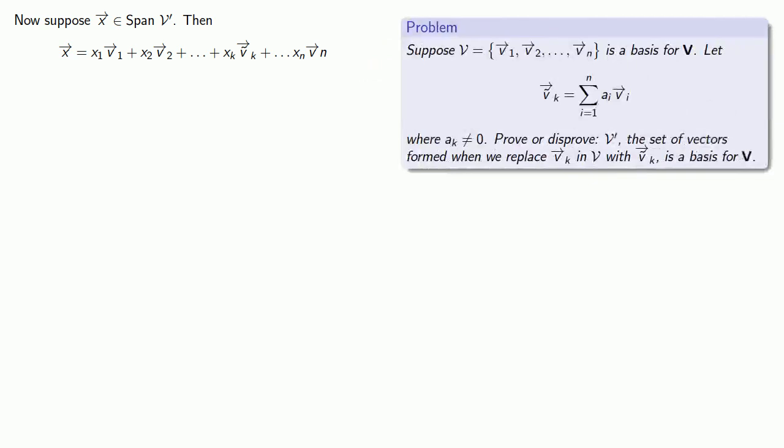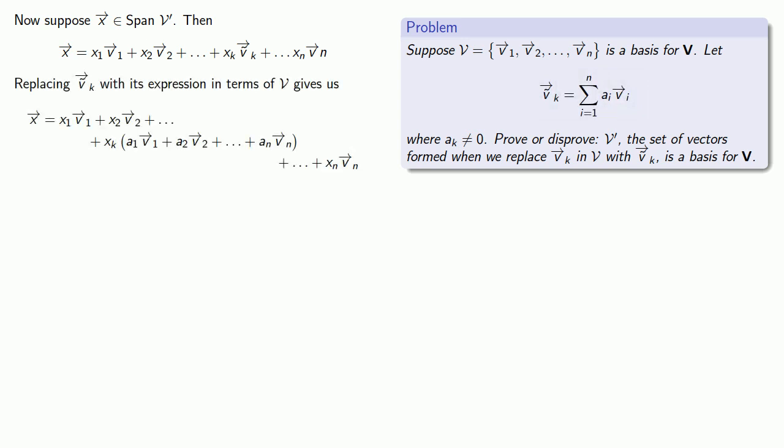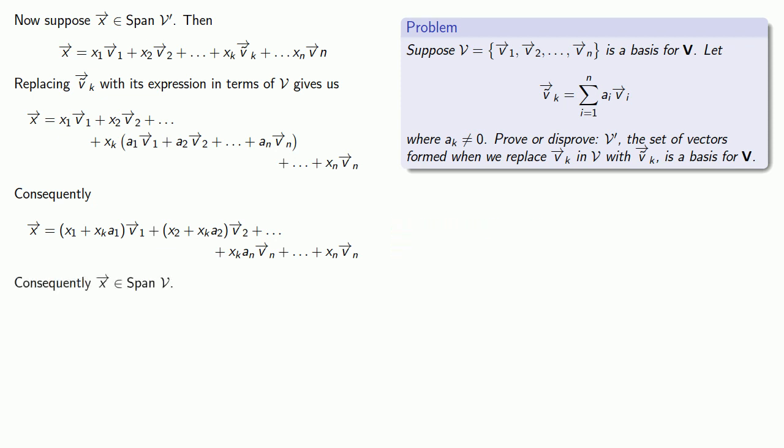How about showing they span the same space? First, the easy direction. If x is in the span of v prime, then x is a linear combination of the vectors in v prime, including that v tilde k vector. Because we know what v tilde k is in terms of v1 through vn, we can replace it and collect like terms, and that tells us x is a linear combination of vectors in v, so x is in the span of v.